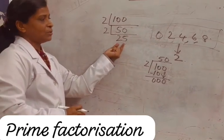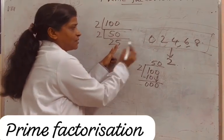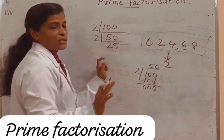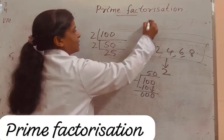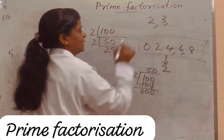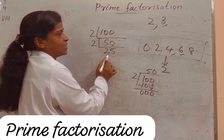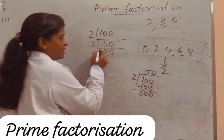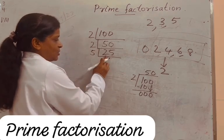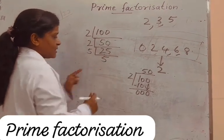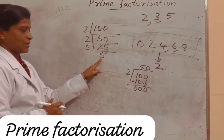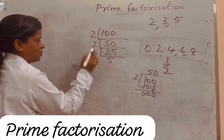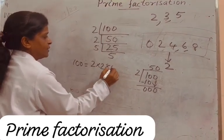Is 25 divisible by 2? The last digit is 5. If the last digit is 0, 2, 4, 6, or 8, it is divisible by 2 — 5 is not, so it's not divisible by 2. Take the next prime number, 3. Is 25 in the multiplication table of 3? No, so it's not divisible by 3. Next prime number is 5. 25 is divisible by 5. 25 divided by 5 is 5. We got a prime number, so we can stop.